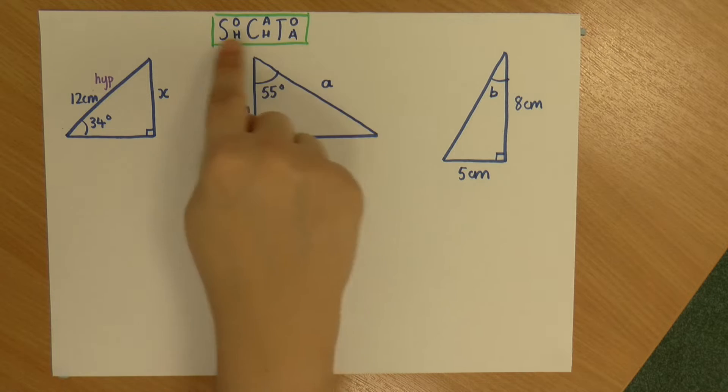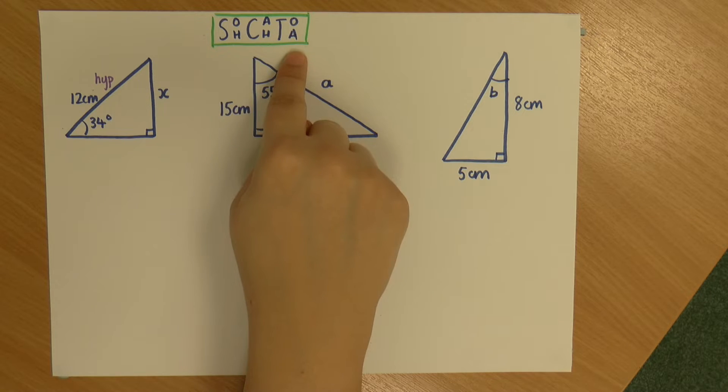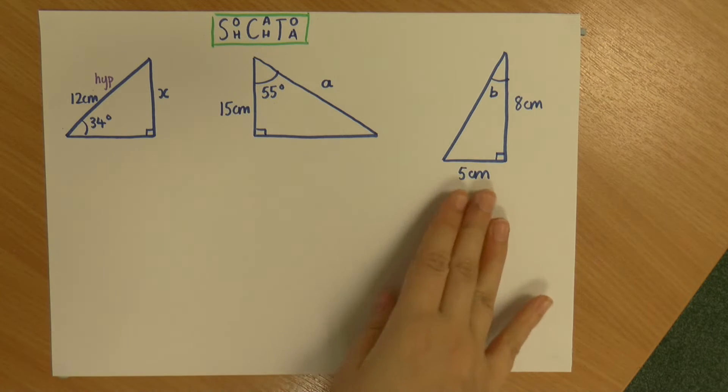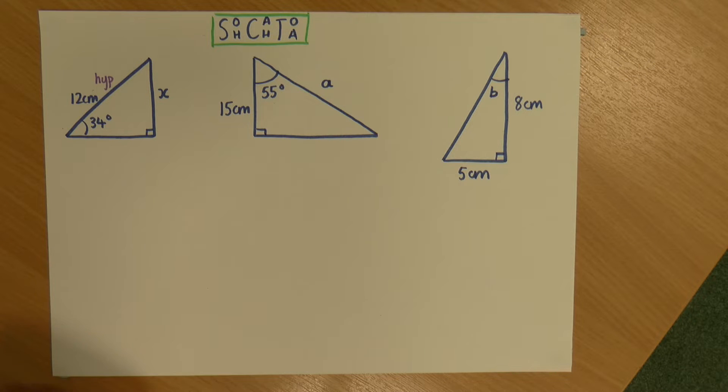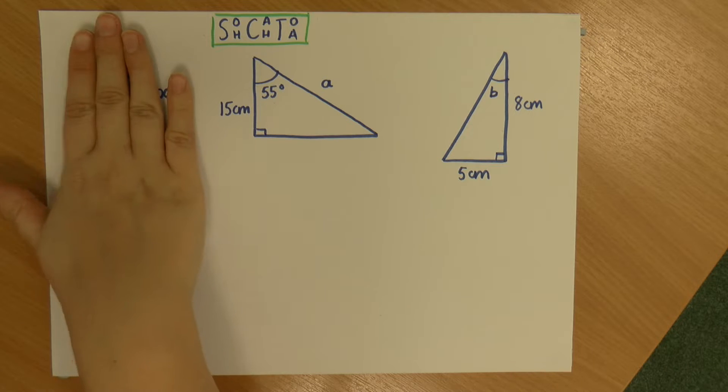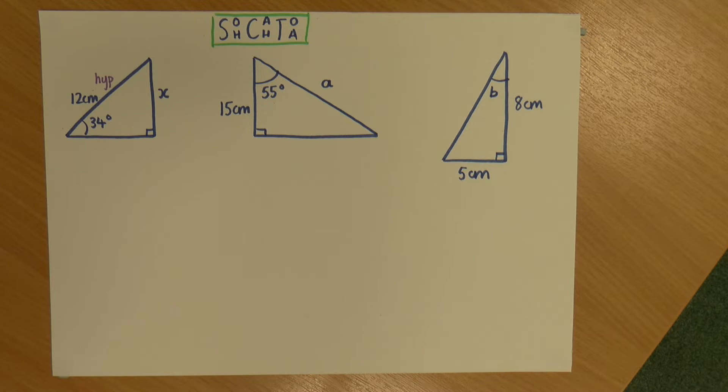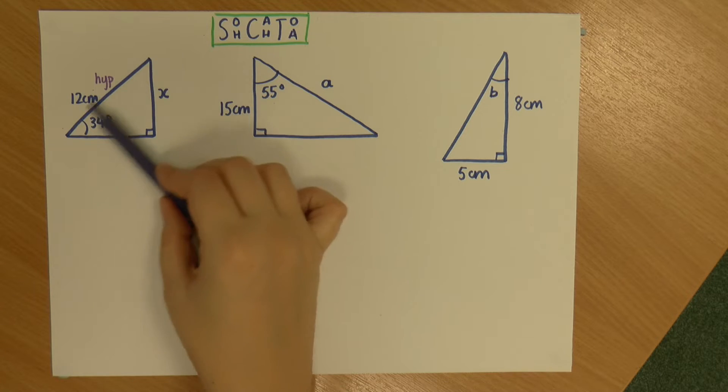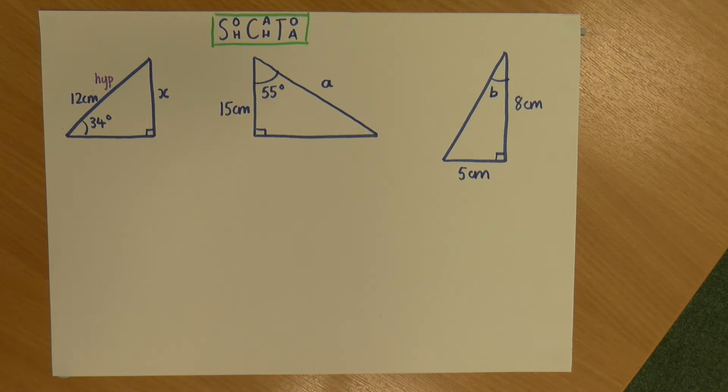So it may be something that looks like this, SOHCAHTOA, or it may be something in a longer format. So I'm going to do one of each, so we'll talk about the longer format as they come up, in case you recognize those easier. So let's start with this left-hand triangle. The first thing I need to do is identify my hypotenuse, my opposite, and my adjacent. Now the hypotenuse has already been identified. It is the longest side, the diagonal, opposite the right angle.